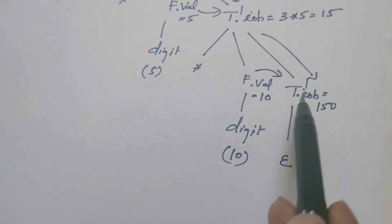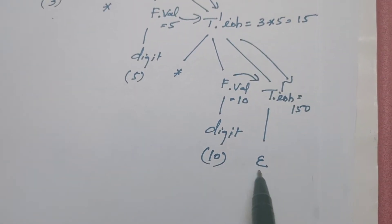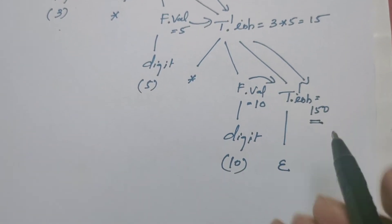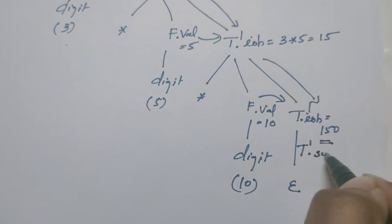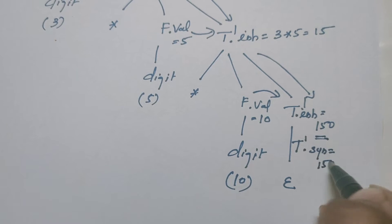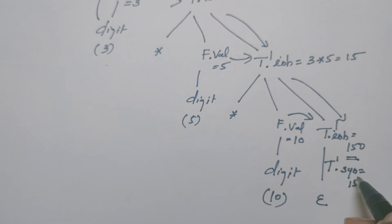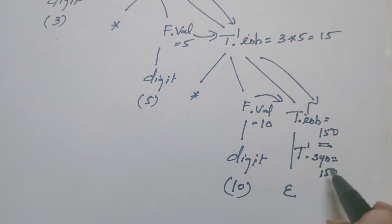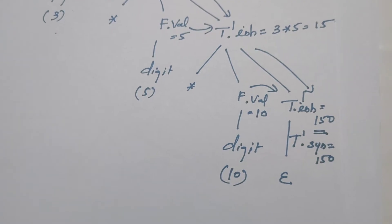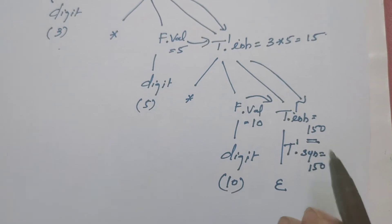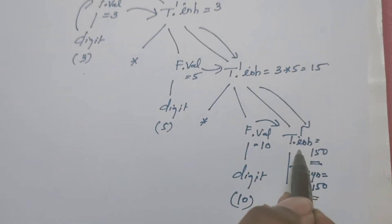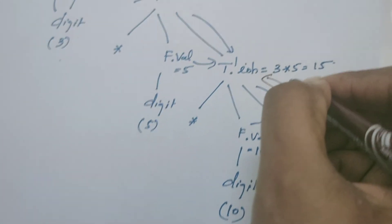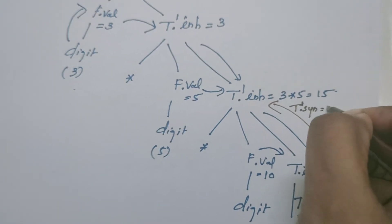Further, there is nothing to flow down here because T' is replaced by epsilon — the parse tree growth is stopped here. Once the parse tree growth is stopped, the value generated is stored in the same node. If a value is generated by the node itself, it is called a synthesized attribute. Let me define the same node by another attribute called SYN, indicating synthesized attribute. This value is 150.